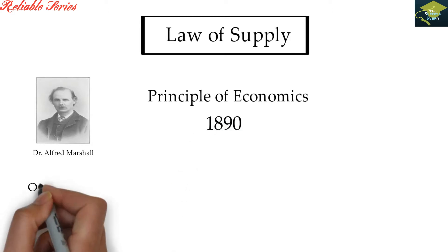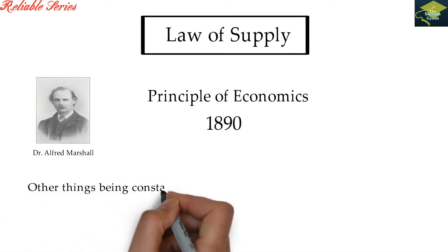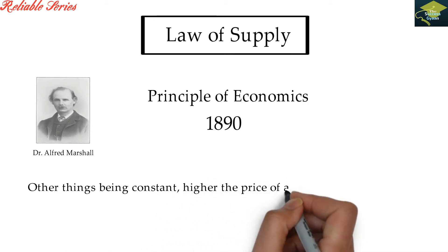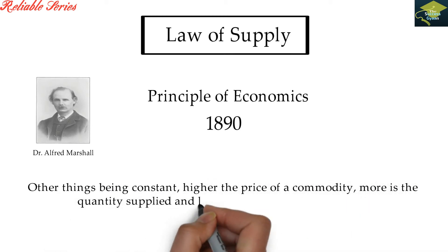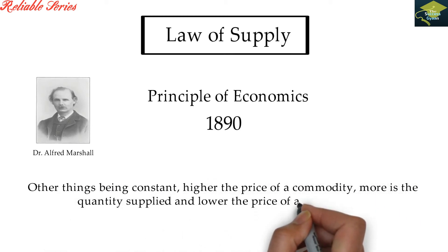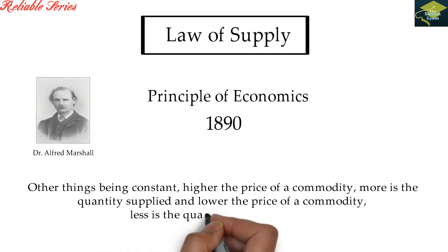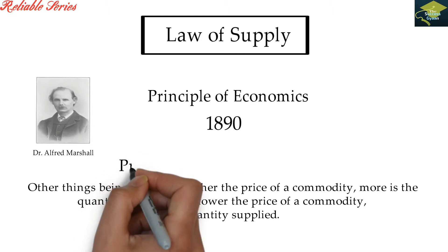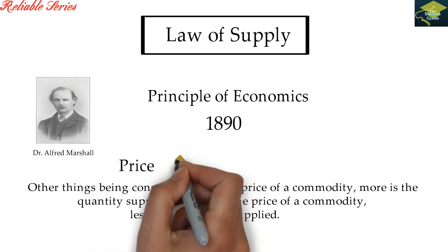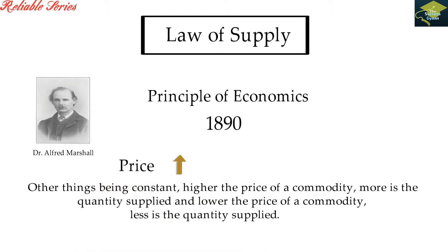According to Alfred Marshall, other things being constant, higher the price of the commodity, more is the quantity supplied, and lower the price of the commodity, less is the quantity supplied. Thus, the law of supply in micro-economics बताता है कि other factors being constant, जब किसी product का price increase होता है तो market में उस product की supply होने वाली quantity भी increase हो जाती है, and vice versa.